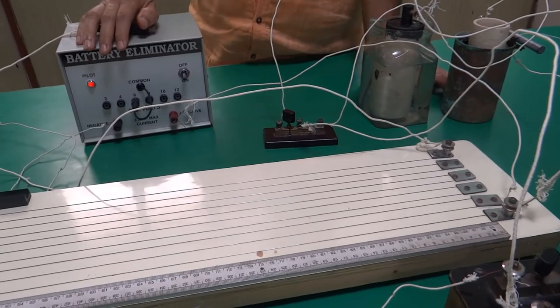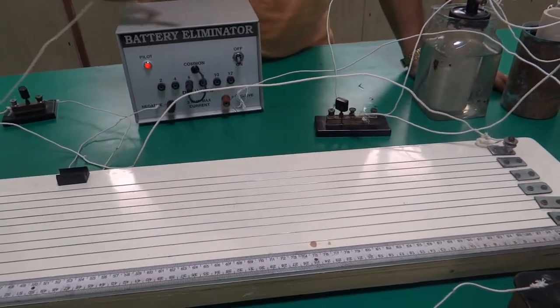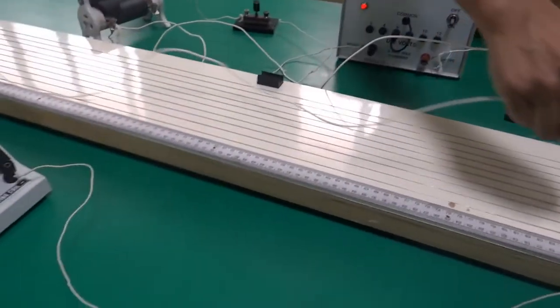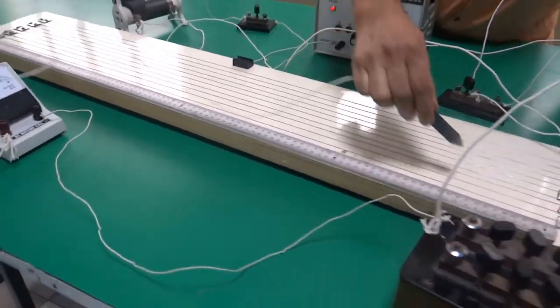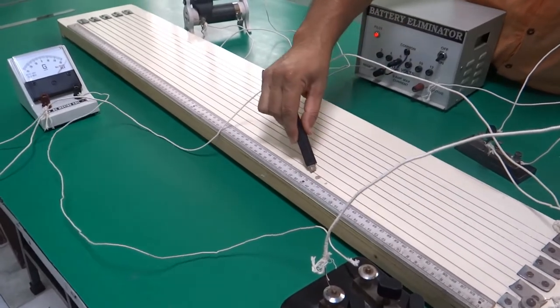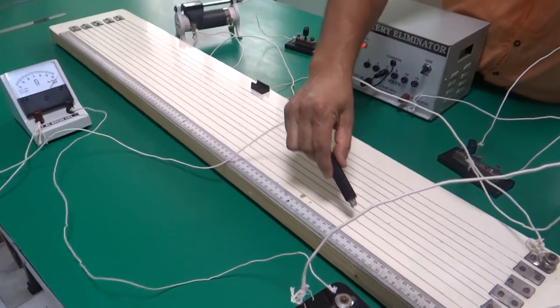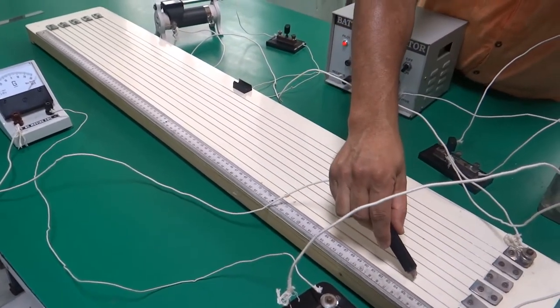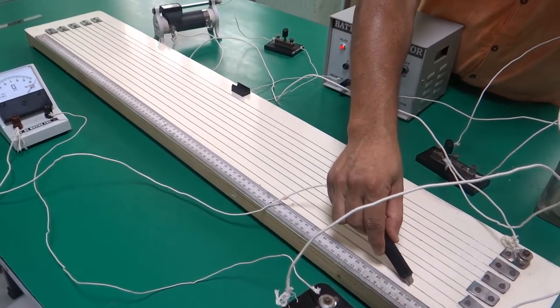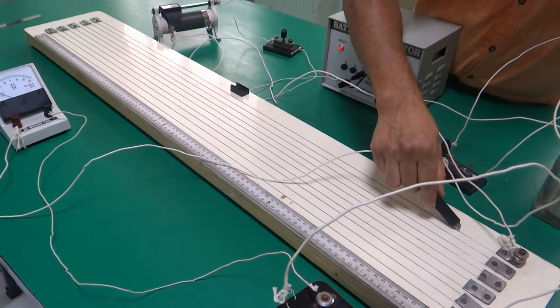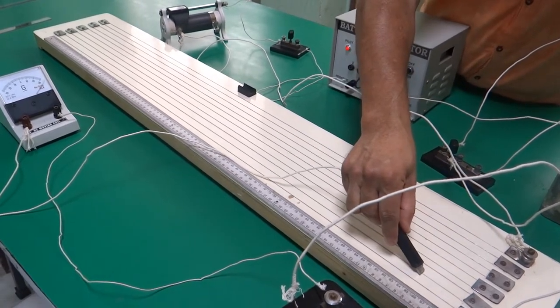So now you can go ahead to find the null point for Leclanche cell. Remember, while you are trying to find the null point, never scratch jockey on the wire. Don't be very hard. You can just touch the jockey because the metallic end of the jockey will show deflection. Touch here, then touch here. Deflection in opposite direction. Move to the next wire.